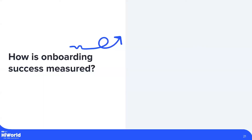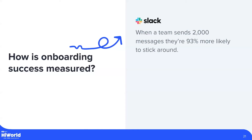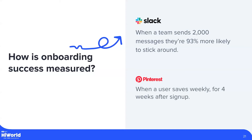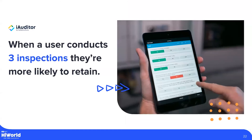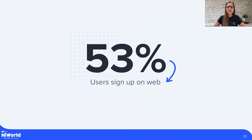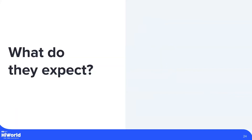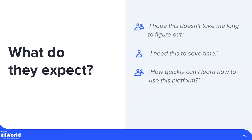We started looking at how other companies measure their product onboarding success. At Slack, when a team sends 2,000 messages, they are 93% more likely to stick around. At Pinterest, when a user saves weekly for four weeks after sign-up. When we deep-dived into our user journey, we saw that when a user conducts three inspections, they are more likely to retain. We also saw that 53% of users sign up on web, and majority of them are managers and business owners looking for a digital solution to go paperless and have everything in one place. A lot of feedback was around time and learning curve, but the best way to summarize it is simplicity — a product that doesn't do too much and is easy to use, especially for managers who want to set everything up quickly and introduce this tool to their team without spending hours on training.